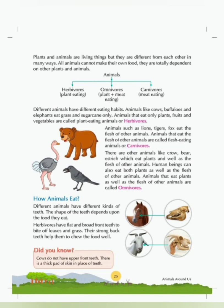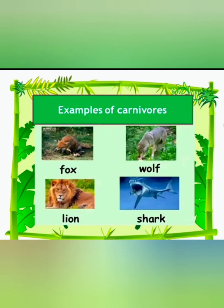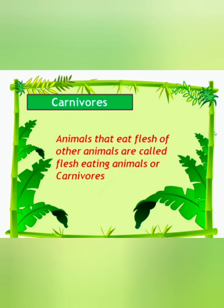Animals such as lions, tigers and fox eat flesh of other animals. Animals that eat the flesh of other animals are called flesh-eating animals or carnivores. Animals like lion, tiger, fox and hyena are such animals and are called carnivores.